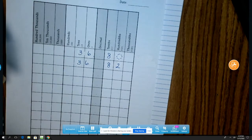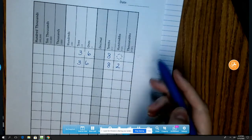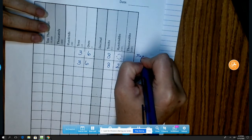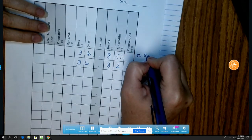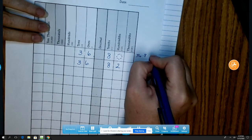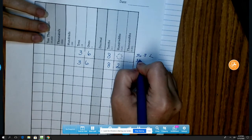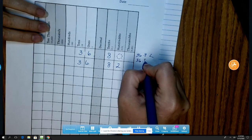36 and 8 tenths is less than 36 and 82 hundredths.